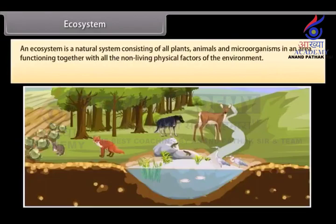An ecosystem is a natural system consisting of all plants, animals and microorganisms in an area functioning together with all the non-living physical factors of the environment.